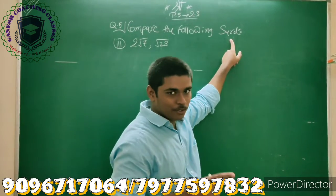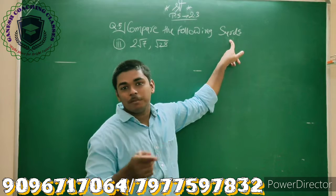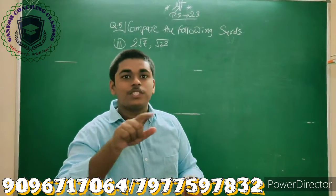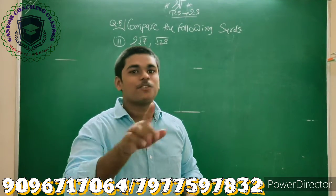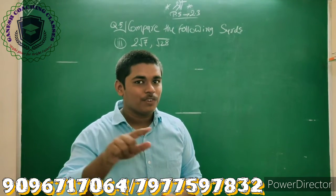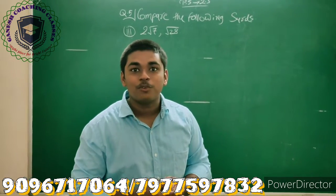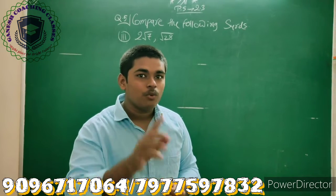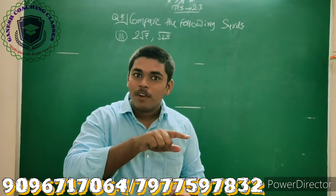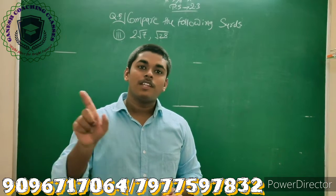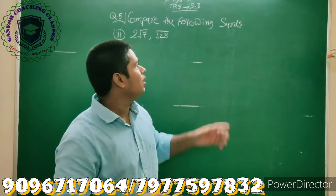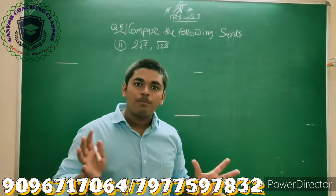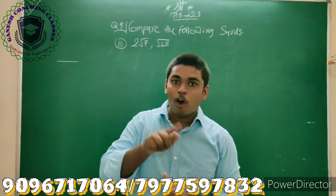Compare the following surds. First of all, tell me what is meant by surds. A surd is a type of root — the root which cannot be simplified further is called a surd. For example, square root of 4 is 2, which simplifies. But square root of 3 cannot be simplified further, so this root is called a surd. When comparing surds, we compare the radicand.